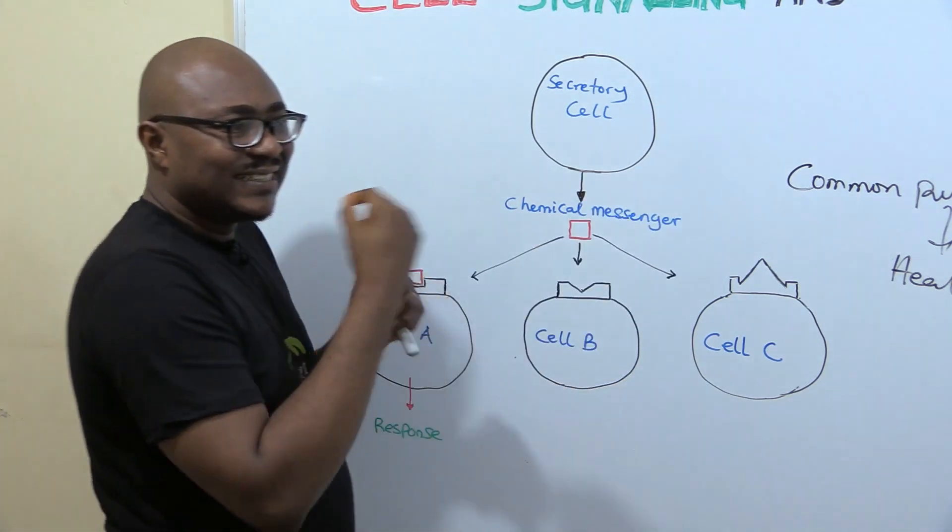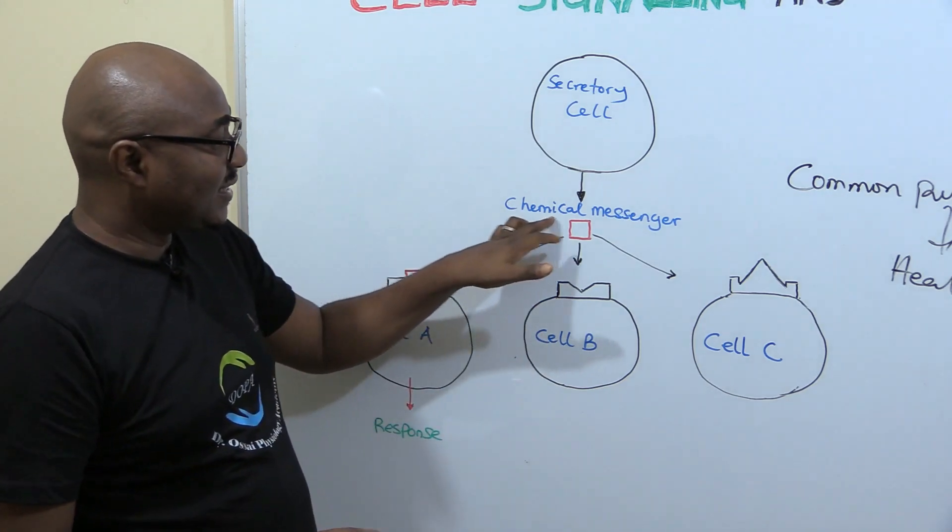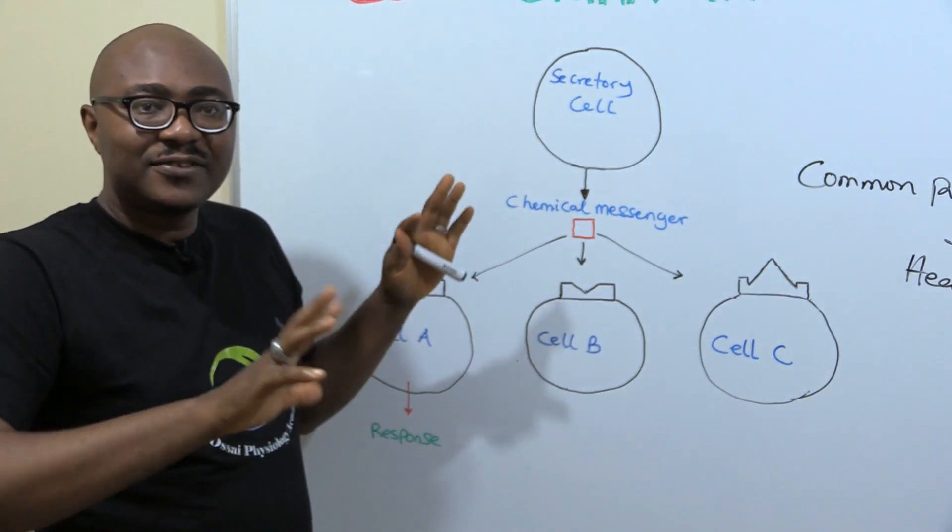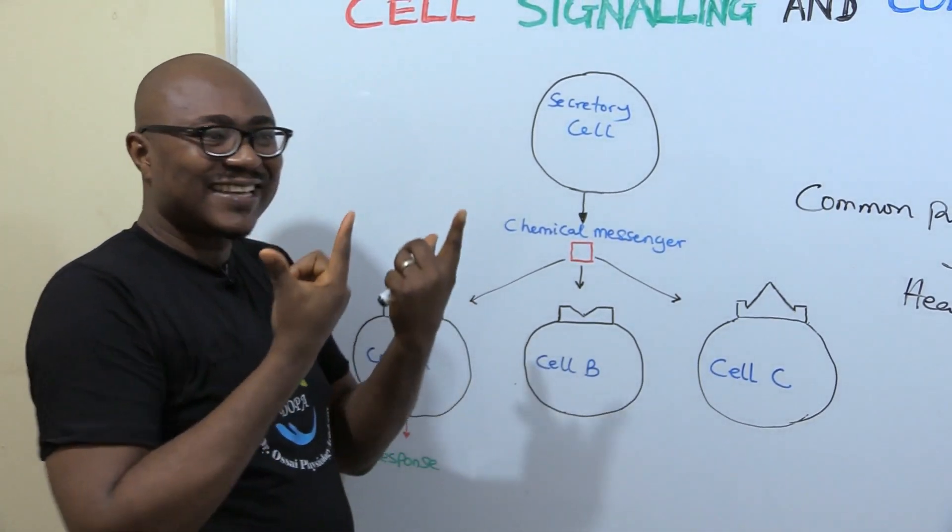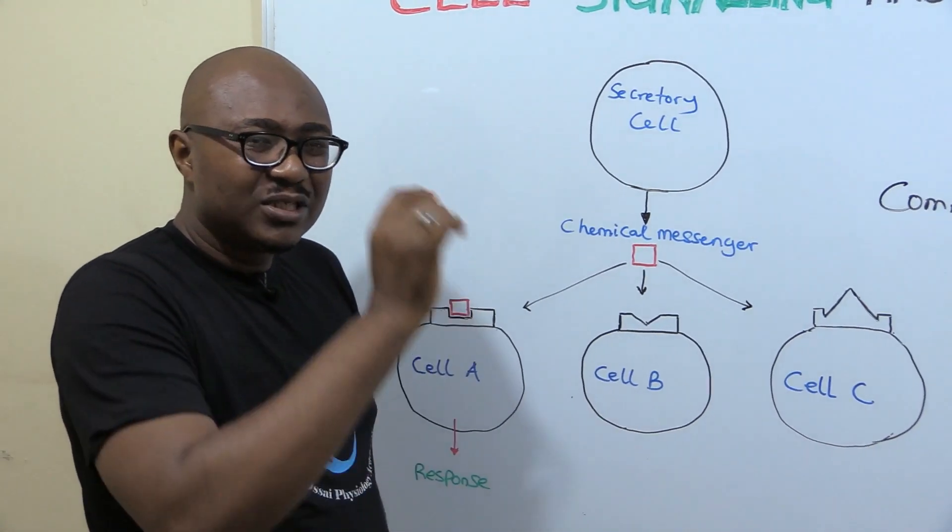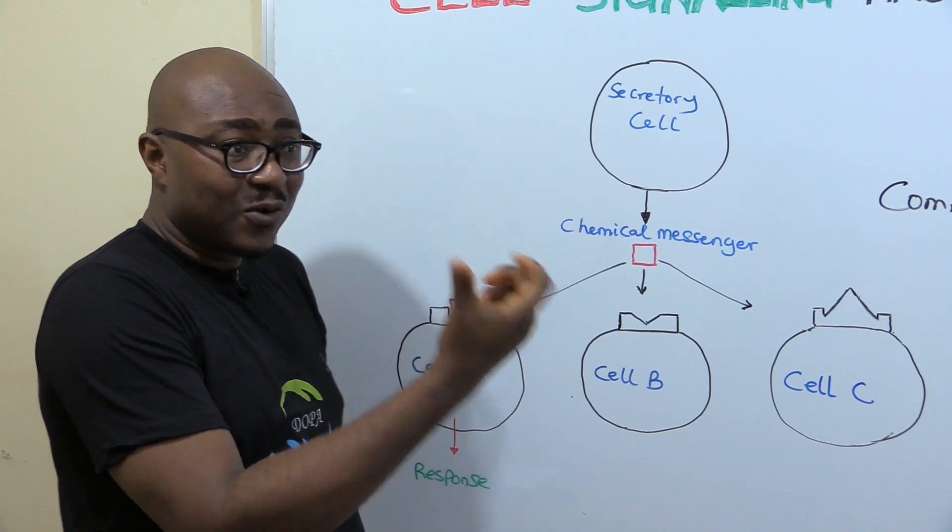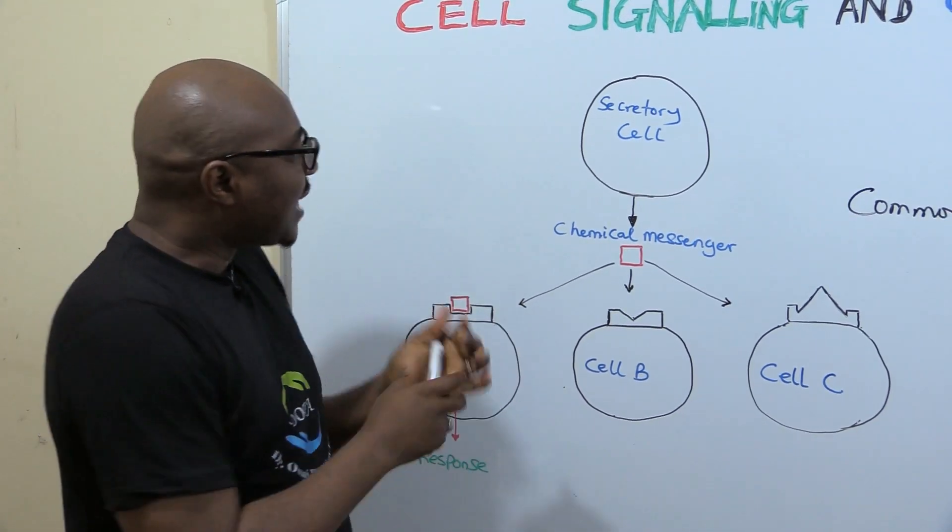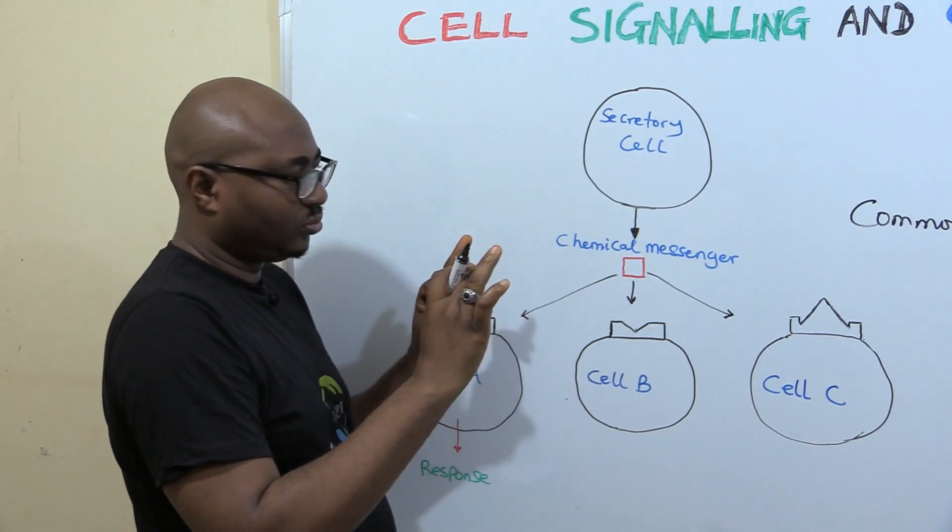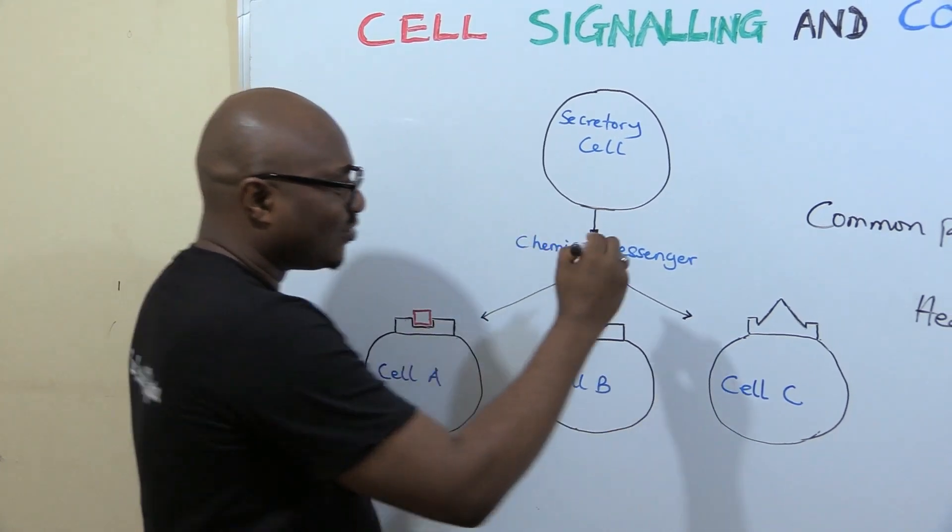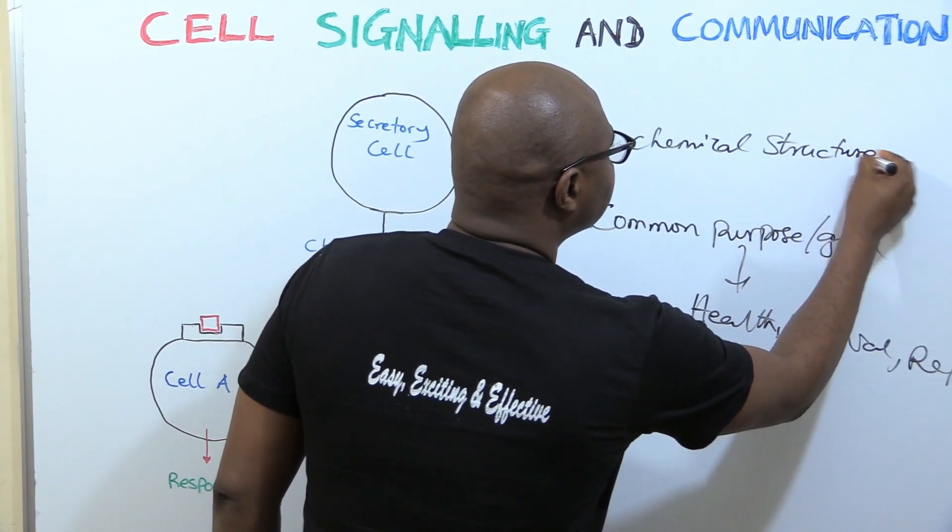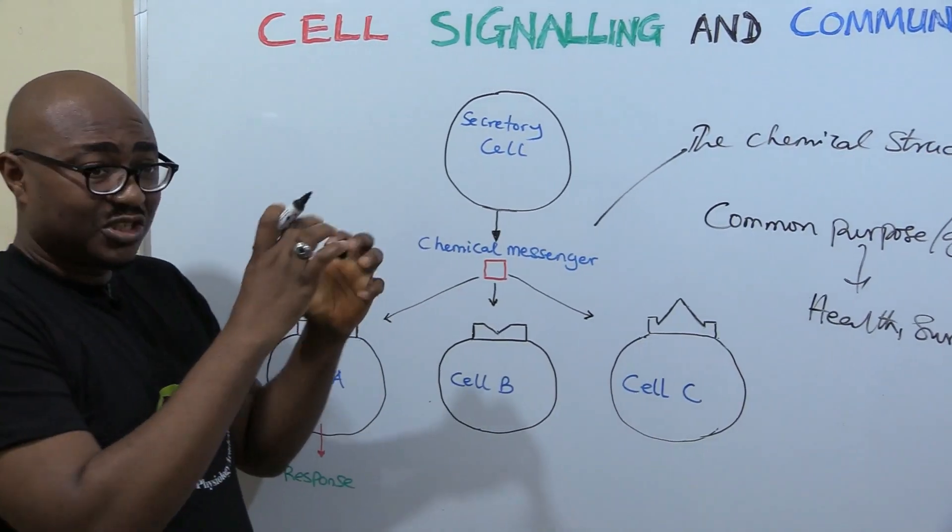So the cell communicates in a chemical way. That's why you see this thing here, a chemical messenger. So the cell communicates. That chemical messenger reaches several other cells. But not all the cells respond. Not all the cells can understand. So what and what needs to happen for the cell to understand? But first of all, I'll tell you the language before we talk about the interpretation of that language. Now, the cells communicate through chemical means. So the chemical structure, the chemical structure is the language.